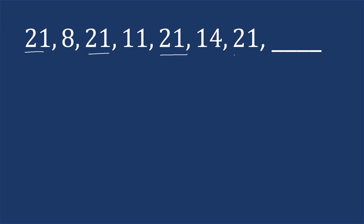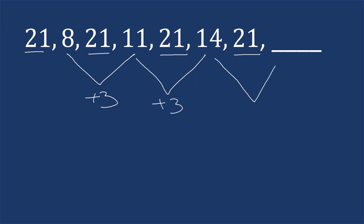Another way to look at it is that these twenty-ones stay the same — every other term is twenty-one. Looking at the other terms: going from eight to eleven is adding three, and going from eleven to fourteen is adding three. So we do the same thing, add three, and get seventeen.